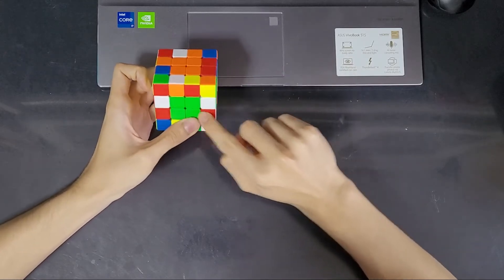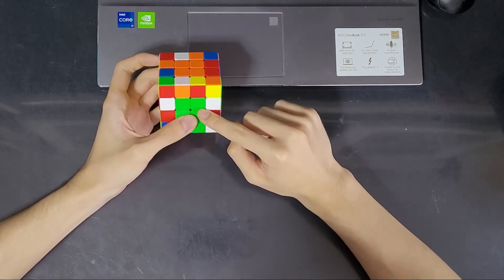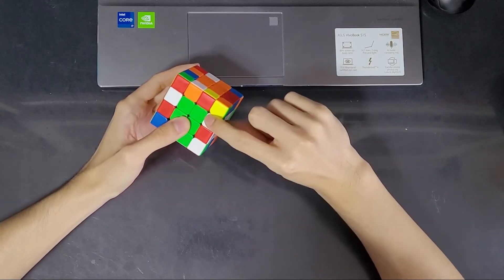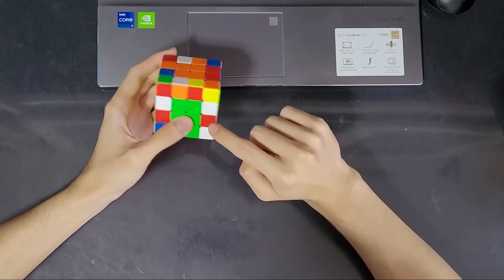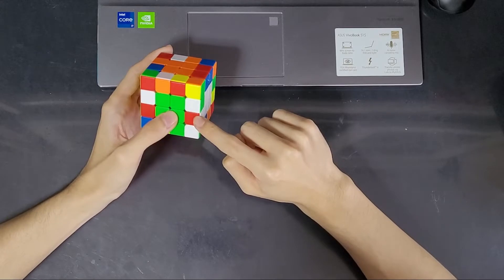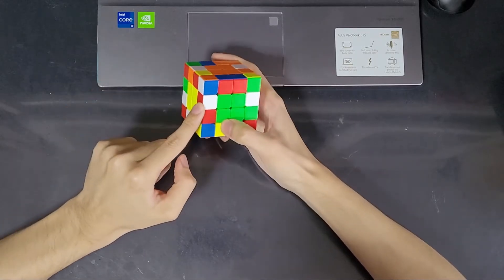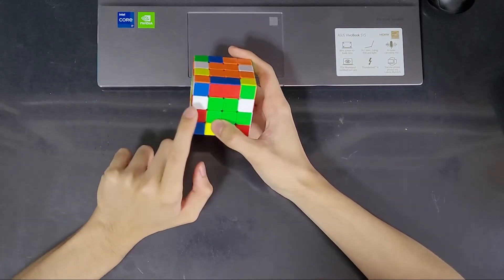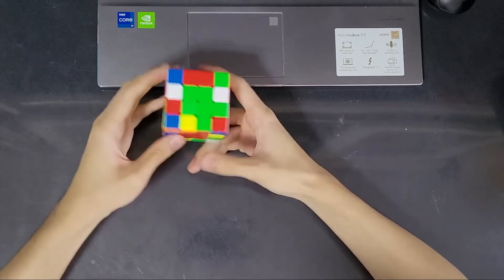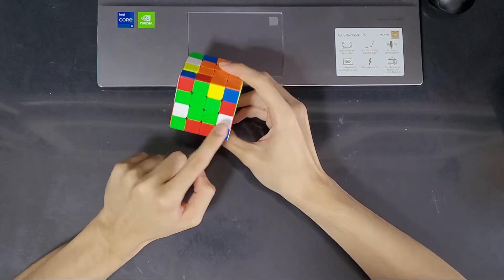So now we have two red and whites in the equator and there are two ways to insert the second red and white in the equator. What you're seeing now is the correct way where one is on top and one is below. The other way is the wrong way where you notice either both of them are on top or both of them are below.